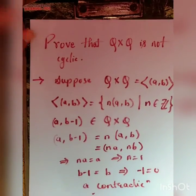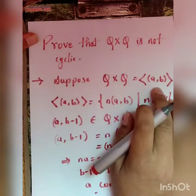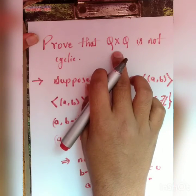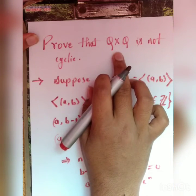Hence our initial assumption that Q × Q was cyclic is wrong. Therefore, Q × Q is a non-cyclic group.